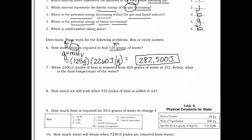Number seven: when 2200 joules of heat — that's our Q — is removed from 825 grams of water — that's our M — at 372 Kelvin, our initial temperature T_I, what is our final temperature T_F? My suggestion is to first solve for ΔT, then use common sense to find the final temperature. You could plug in T_F minus T_I for ΔT, but then you'd have to make your joules negative because heat is removed. I wouldn't suggest that approach.